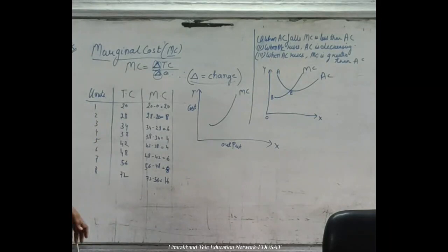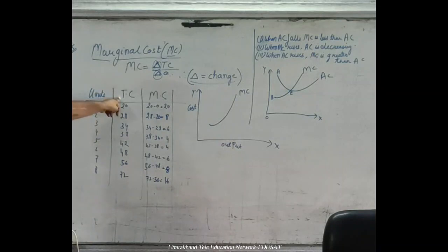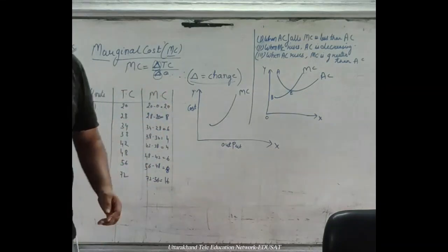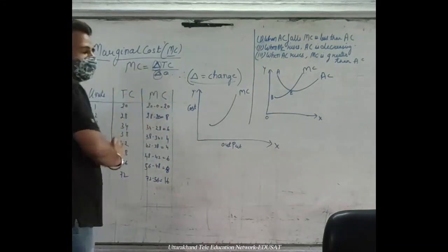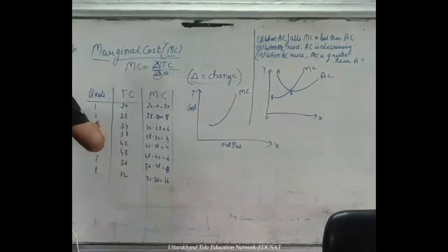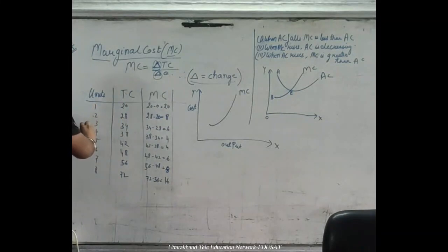Now we have a table. Here is the main screen. We have a table with quantities: 1, 2, 3, 4, 5, 6, 7, 8.